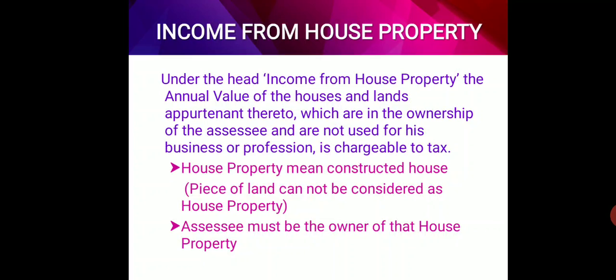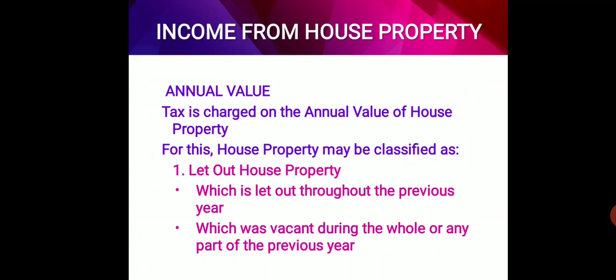Two important rules for this are: house property means a constructed house only — a piece of land cannot be considered as house property. Another rule is that the owner of the house property should be the assessee. If he is not the owner, then this will not be considered as his income from house property under this head.